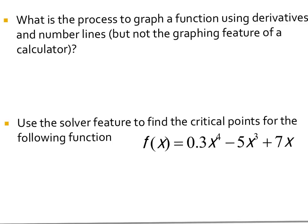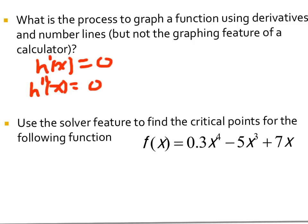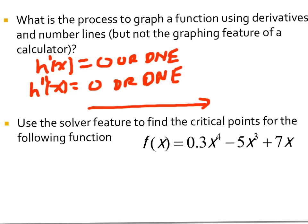The question is: what's the process to graph a function using derivatives and number lines? The idea is that you take both the derivative and set it equal to zero, and the second derivative, and also look for where they may not exist. You place these numbers on a number line — these become your critical points. All zeros and DNEs go on the number line, and then you find points to the left and right of each to find the behavior. That's the process to graph a function without using the graphing feature of the calculator.